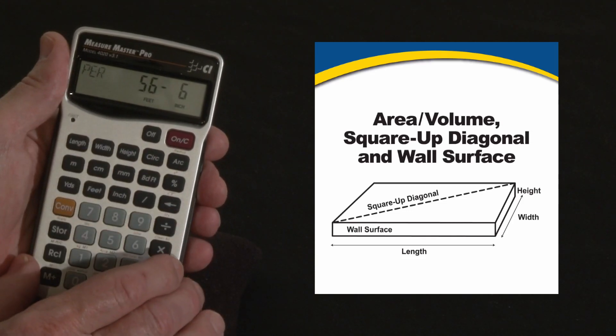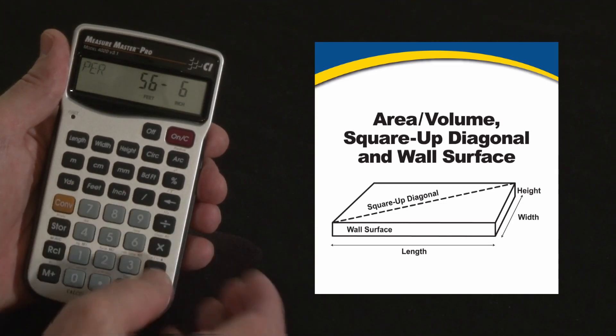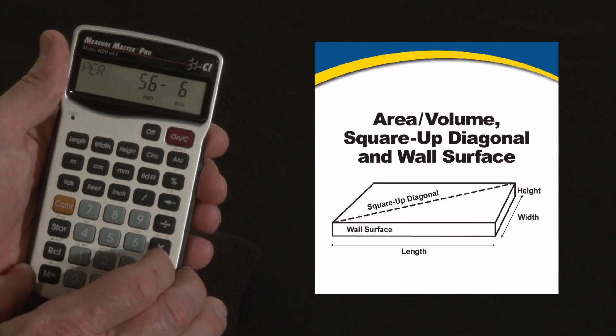One more press gives you the perimeter, so this is the total lineal footage around the perimeter of this room, whether it be for trim or any other kind of treatment you need to do, that's the number you're looking for.